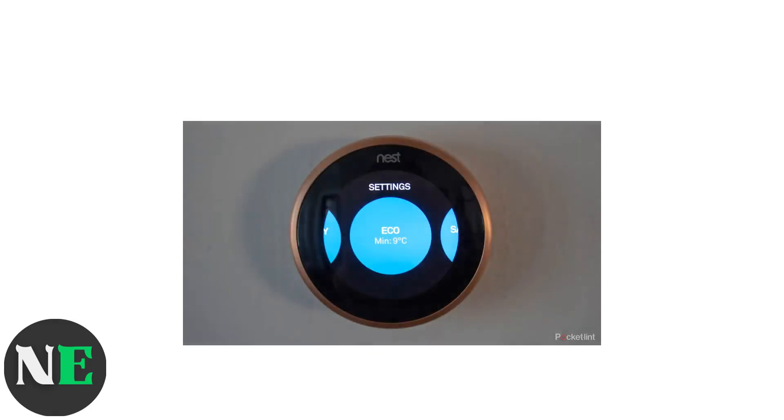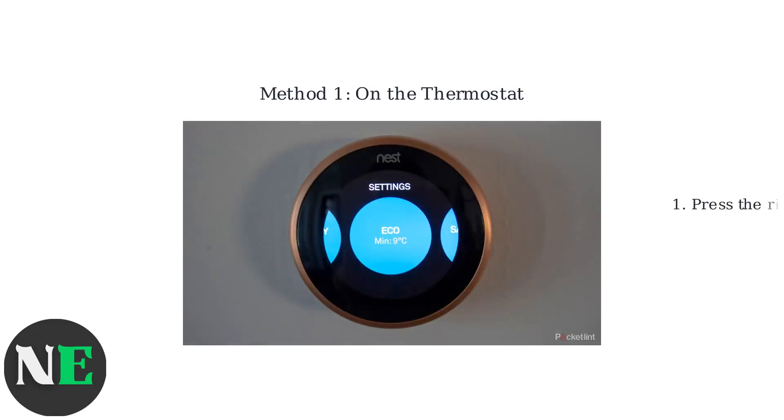To disable it directly on the thermostat, press the ring, navigate to Settings, then Eco, and toggle it off.